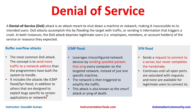An ICMP flood attack leverages misconfigured network devices by sending spoofed packets that ping every computer on the target network instead of just one specific machine. This is more effective on flat, unsegmented networks where an attacker can list all IP addresses and send ping commands with large packet sizes, flooding all bandwidth. The network amplifies the traffic as devices keep pinging each other trying to find real devices. This attack is known as a Smurf attack or ping flood, and once initiated, your complete network turns into a disaster.